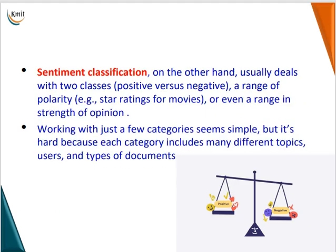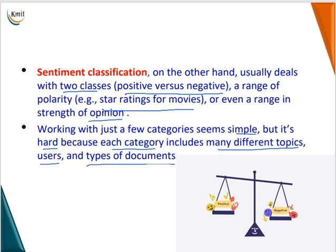Point 3: Sentiment Classification. Sentiment classification usually deals with two classes — positive vs negative — or a range of polarity, for example a star rating for movies, or even a range of strength of opinion. Working with just a few categories seems simple, but it is hard because each category includes many different topics, users, and types of documents.